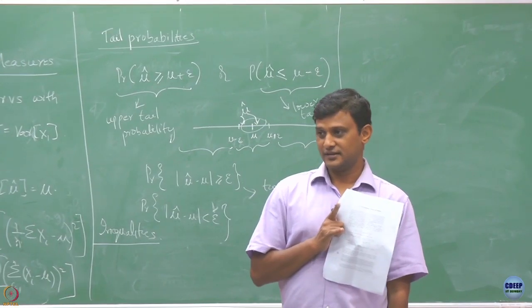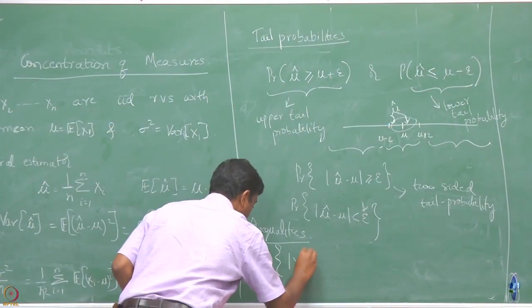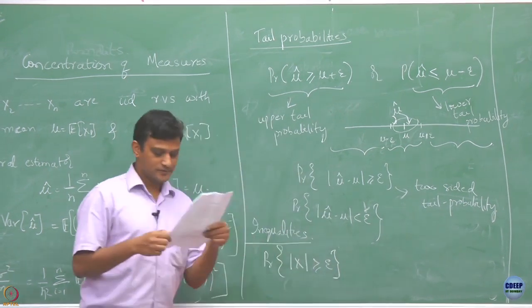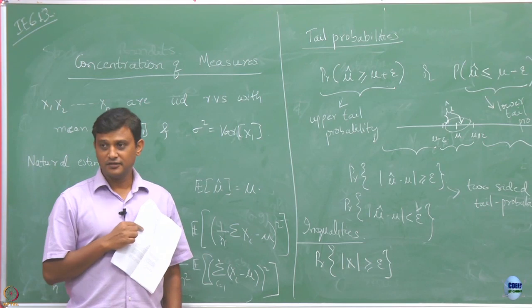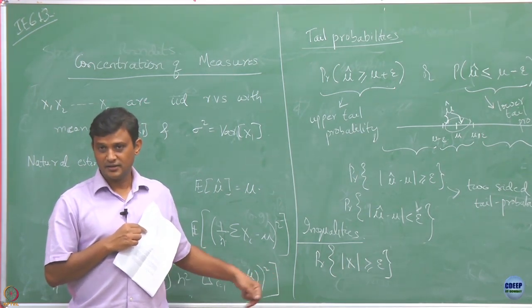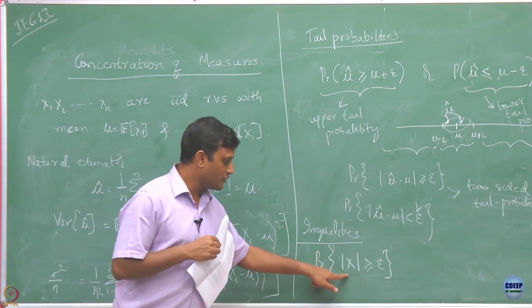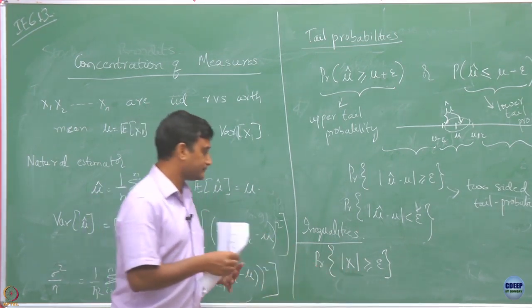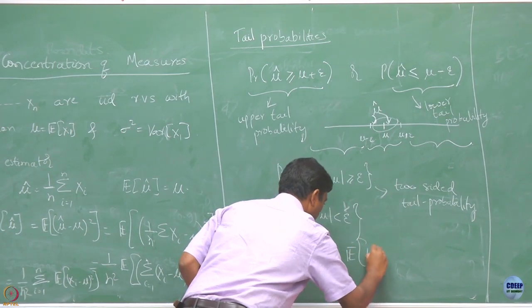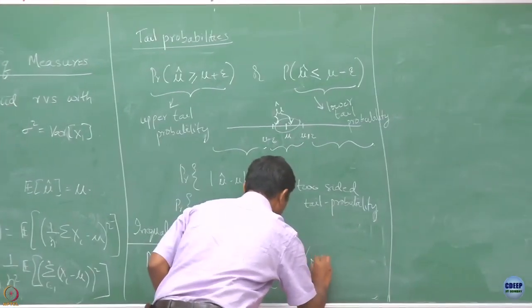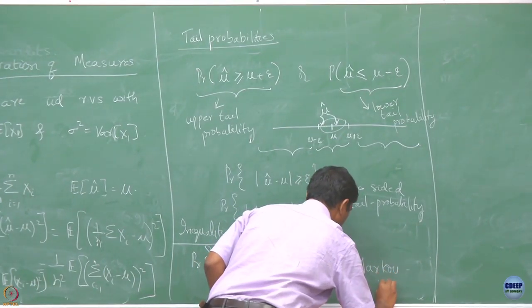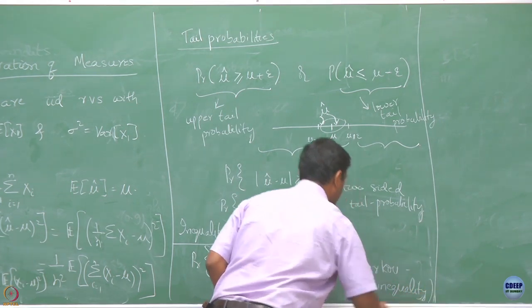How many of you know Markov's inequality? At least all 611 students should know it. Markov's inequality states: P(|x| ≥ ε) ≤ E[|x|] / ε. I have deliberately put the absolute value to ensure the random variable is non-negative.